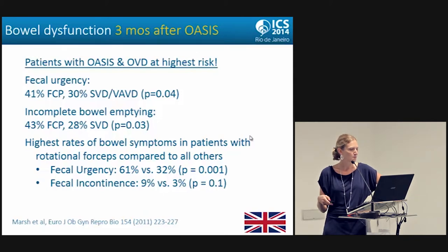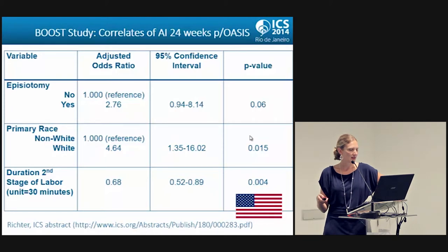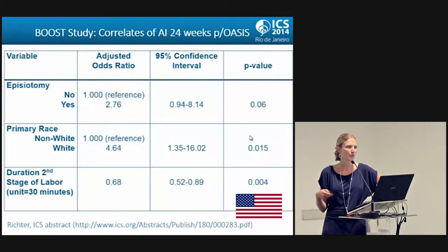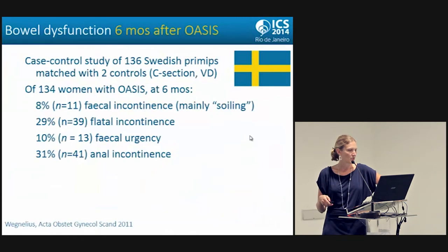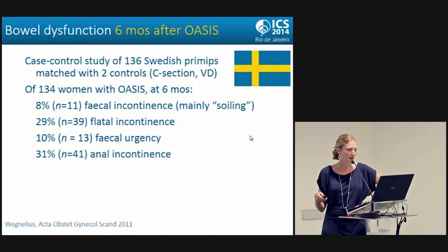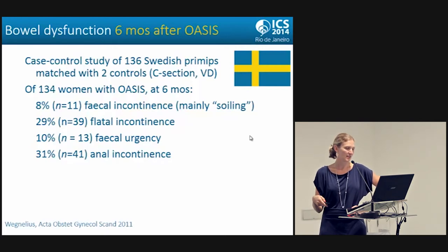The BOOTH study was done in the US and published only as an abstract. It was terminated early due to difficulty recruiting and powering the study. Looking at six-month follow-up after obstetric anal sphincter injury, correlates with anal incontinence were non-white race and longer duration of second stage of labor — a shorter second stage was protective. In a Swedish study of 136 primips matched with two controls of cesarean and vaginal delivery, at six months: 8% had fecal incontinence, 29% had flatal incontinence, 10% had fecal urgency, and 31% had anal incontinence (either fecal or flatal).